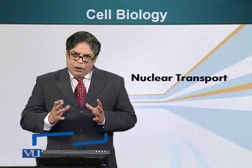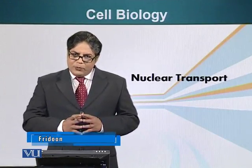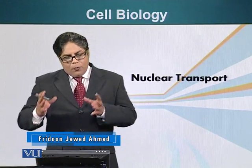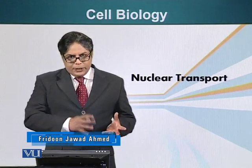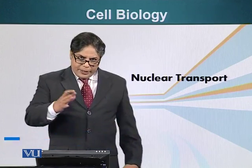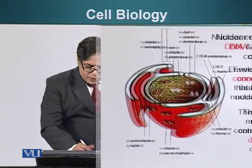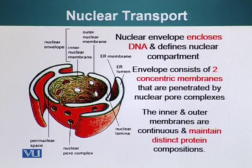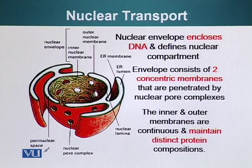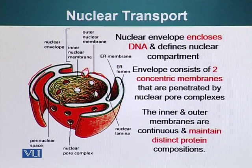The first organelle we are going to talk about in terms of protein transport is the nucleus. Let's see how proteins are imported into the nucleus and how they are exported out. The nuclear envelope encloses DNA and defines the nuclear compartment. The envelope consists of two concentric membranes — it is a double membrane organelle — and they are penetrated by pores through which transport occurs.